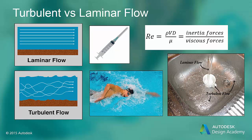The shear forces arising from fluid viscosity are further classified into turbulent or laminar flow forces. In laminar flow, the fluid moves in layers, or lamina, and looks smooth. In turbulent flow, the fluid is chaotic and contains eddies and mixing between the fluid layers. We use the Reynolds number to determine the difference between these two flow regimes.